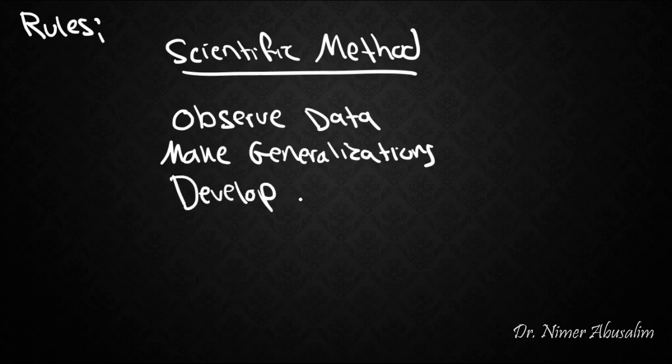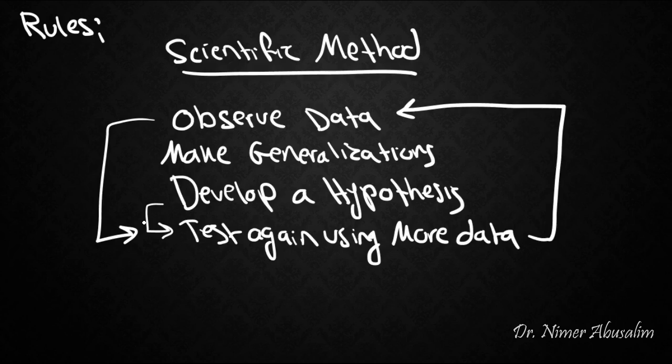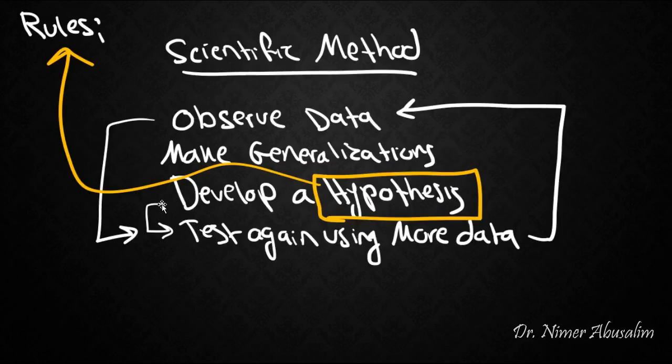Next, we develop a hypothesis to test, and then we test this hypothesis using more data. So then we go ahead and we do this all over again. We get new data and then we observe the data and go back down the list. Again, this is the scientific method. Now, these hypotheses that we come up with can be considered the rules of the language. And these rules are tested again and again until they become more powerful rules.